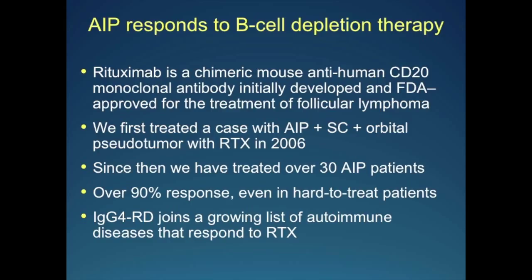In summary, type 1 and type 2 AIP are unique diseases with very pathognomonic features. There are many lessons to be learned — and many more to learn — from knowing about these diseases, and it's very gratifying to see a pancreatic disease which is actually treatable. Thank you.